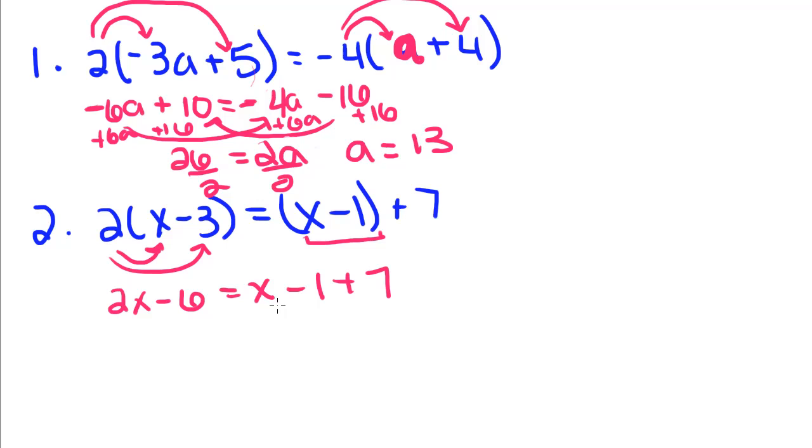So we're going to subtract this x over, and we get x minus 6 equals negative 1 plus 7. We're going to add 6 over, and we get x is equal to negative 1 plus 7, which is positive 6 plus 6, which is 12.